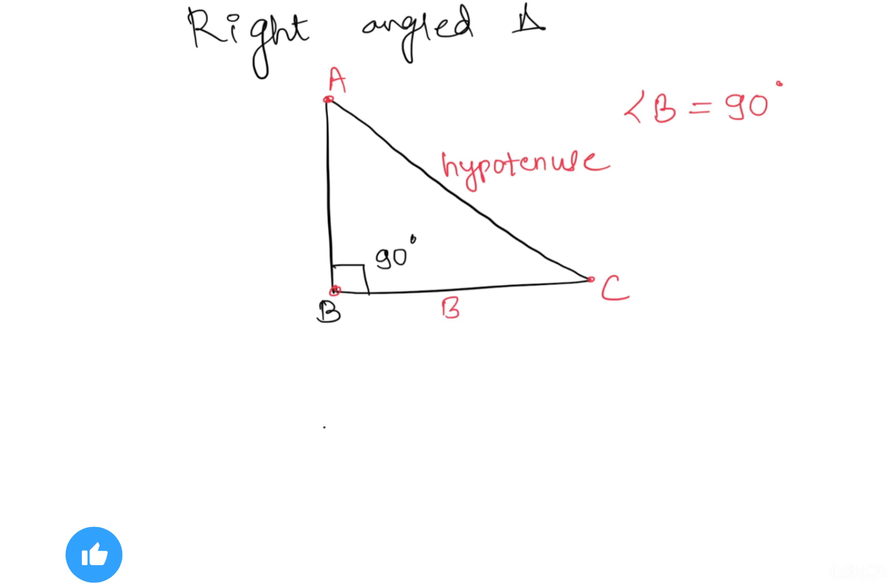This side is called the base and this one is called the height. So here AC is the longest side which is opposite to the right angle, and BC is the base of the triangle.